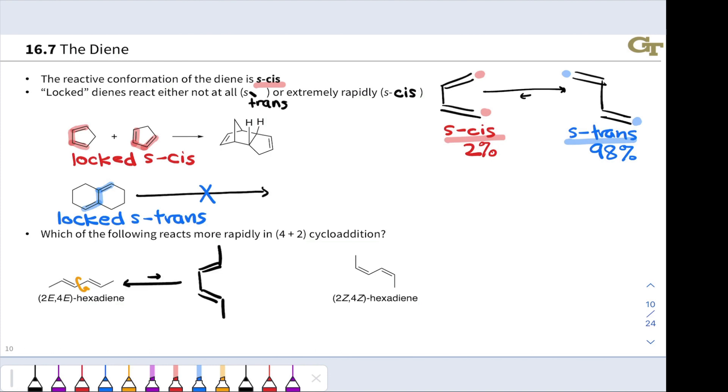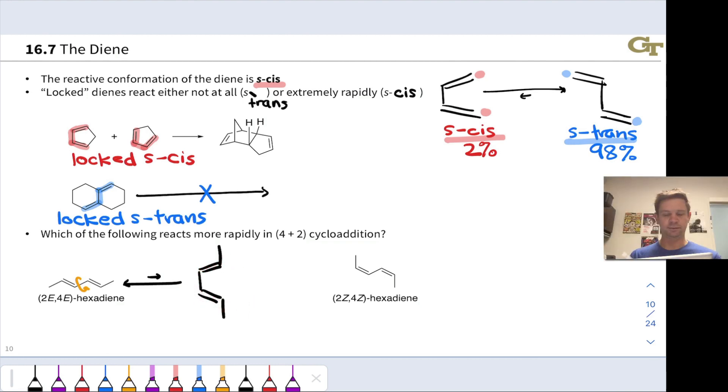When we do that for the structure on the left, we get this structure right here. And the S-trans structure is favored over the S-cis, but we can see that this isn't the worst S-cis structure, right? These two methyl groups end up pointed outside of this kind of C shape formed by the double bonds and the conjugated diene. And so it looks all right.